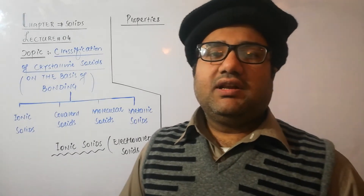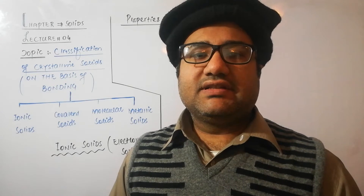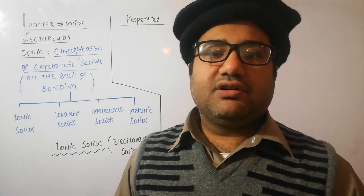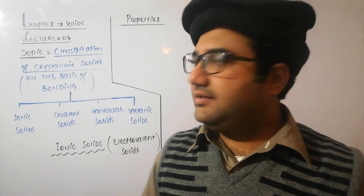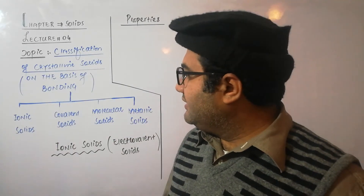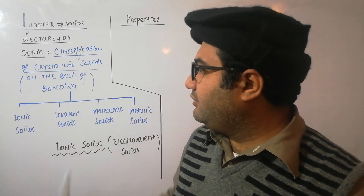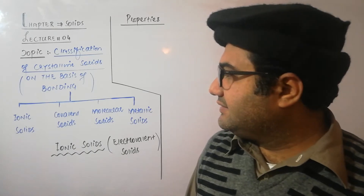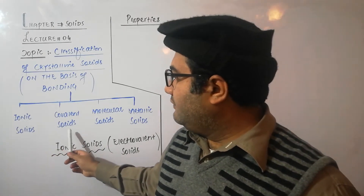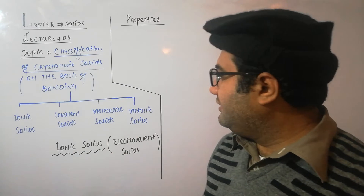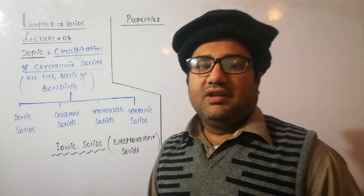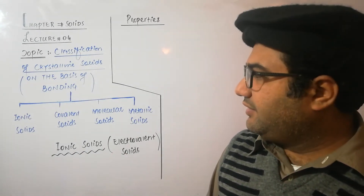The classification we are going to discuss in this lecture is depending upon the nature of the bonding in the crystalline solid. On the basis of bonding, crystalline solids can be divided into four categories: ionic solids, covalent solids, molecular solids, and metallic solids. Let us discuss them one by one.